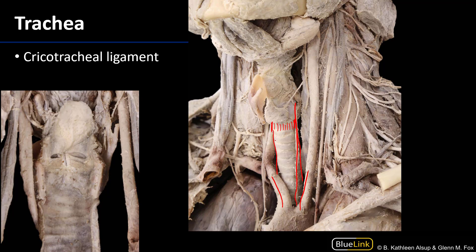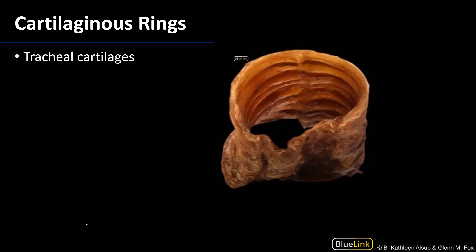We can also see some of the cartilaginous rings which form the wall of the trachea, giving patency to the airway and helping to maintain it in its open state. You can also see more of that cricotracheal ligament in the posterior here as well. This is a transverse section of the trachea; we're looking at it from the posterior, and we can see those cartilaginous rings which are helping to maintain the patency.